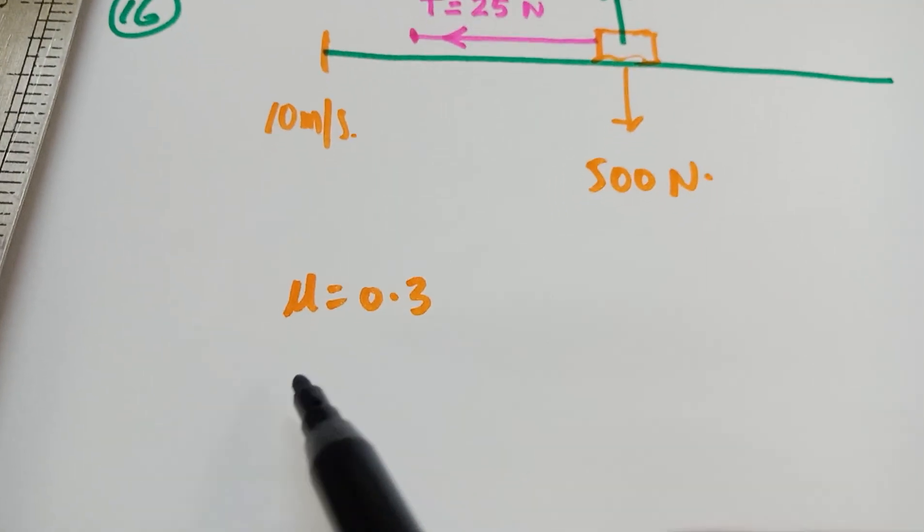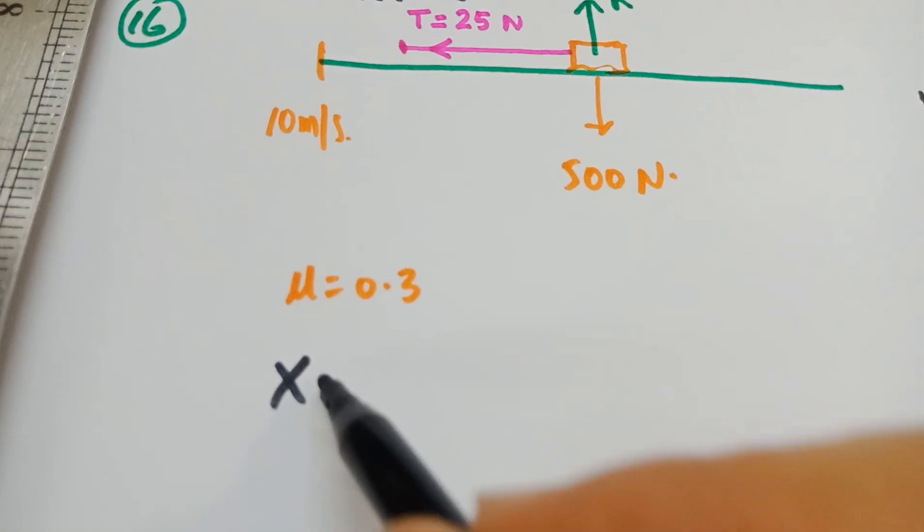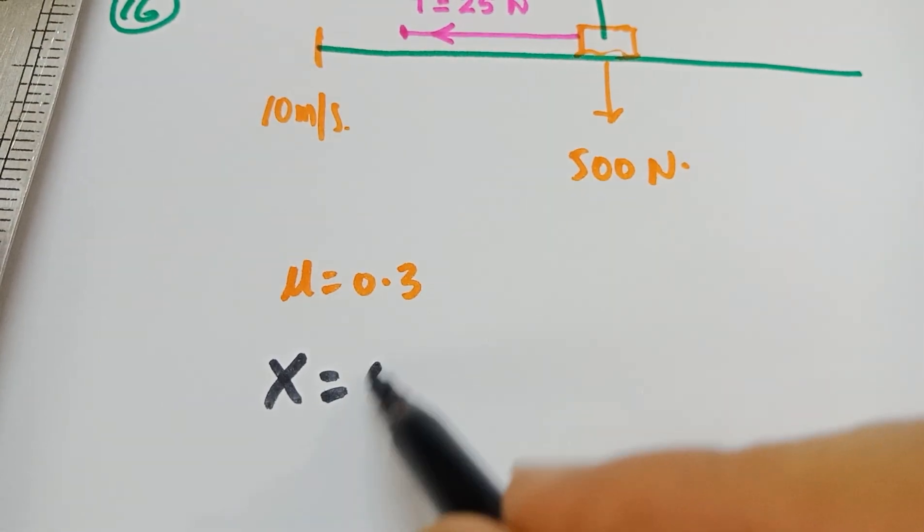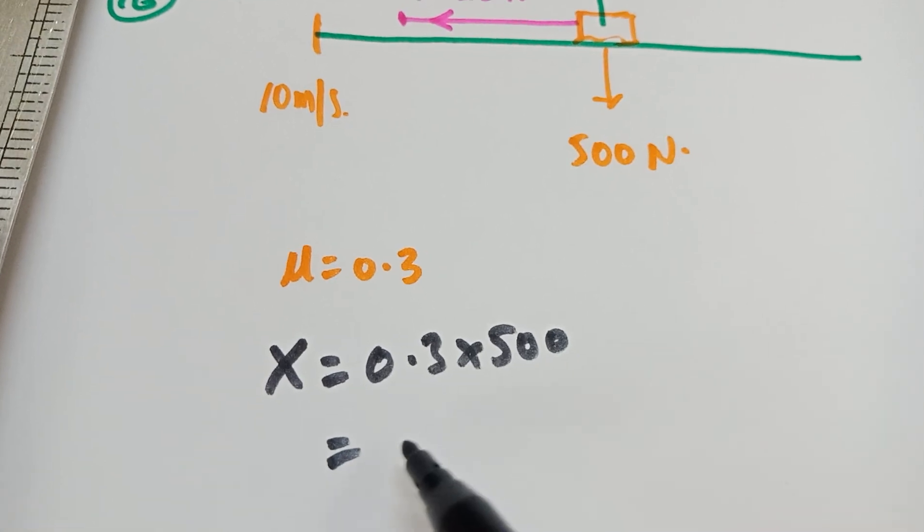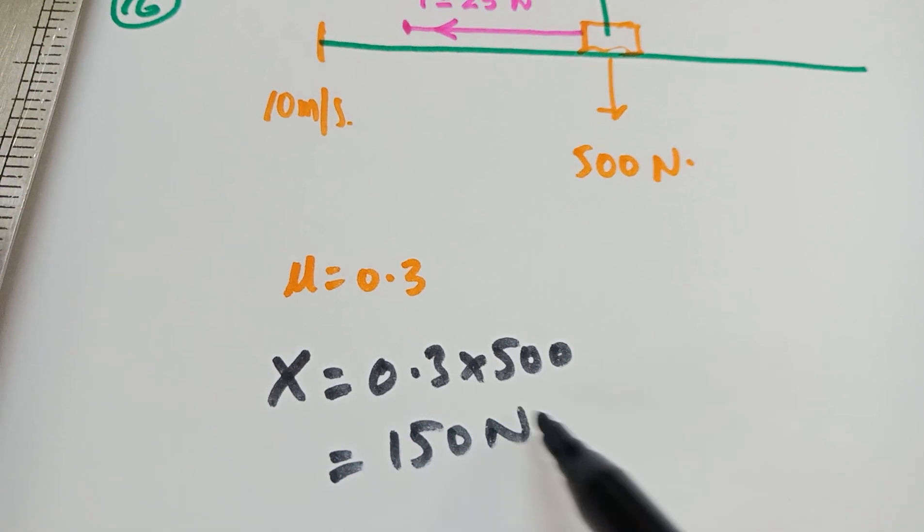so this is given to us as 0.3, so we can determine the frictional force. Let's do that before we proceed into the question. So the frictional force is going to be mu r, that is 0.3 times 500, so that is going to be 150 N.